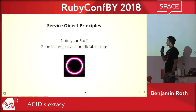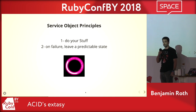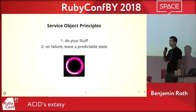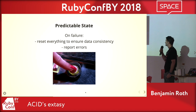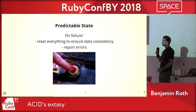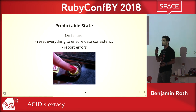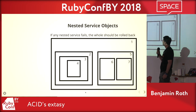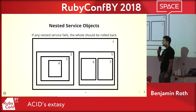There are two core principles of a service object. First, it must do what it describes — for example, 'transfer money' must actually transfer money. More importantly, it must ensure data consistency: on failure it must leave a predictable state. Most of the time that means resetting everything — as if it never happened — pushing the error and resetting, like hitting the good old reset button.